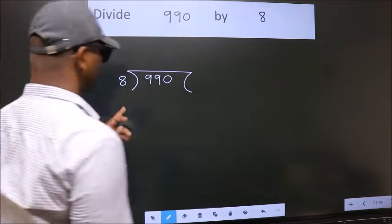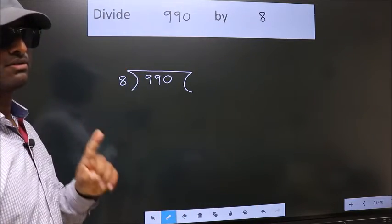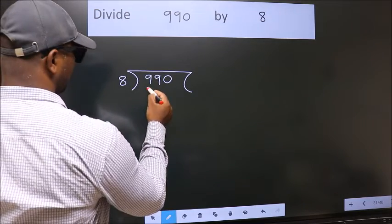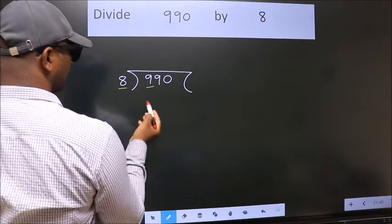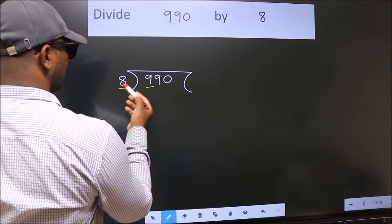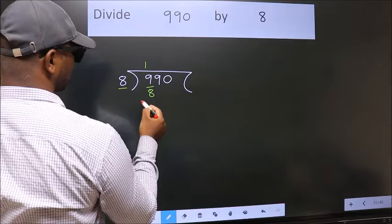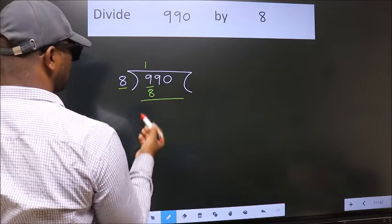This is your step 1. Next, here we have 9, here 8. A number close to 9 in 8 table is 8 once 8. Now, we should subtract.